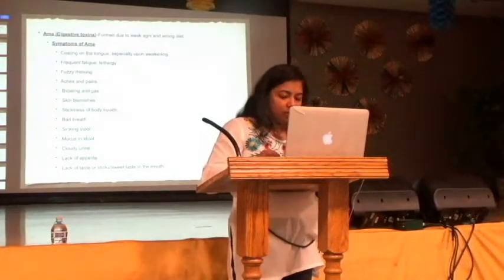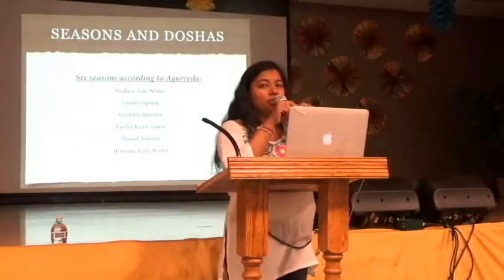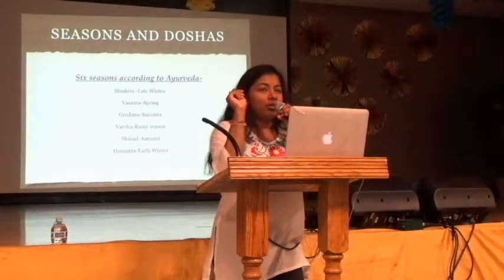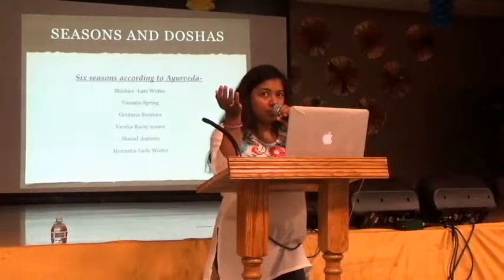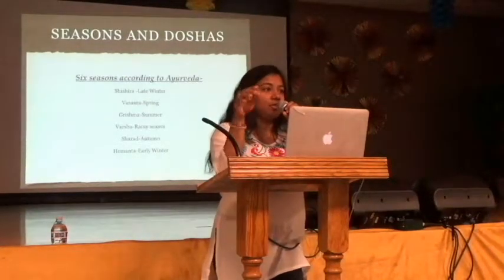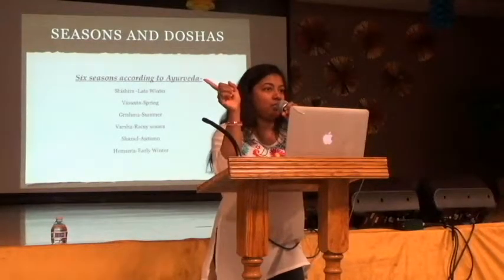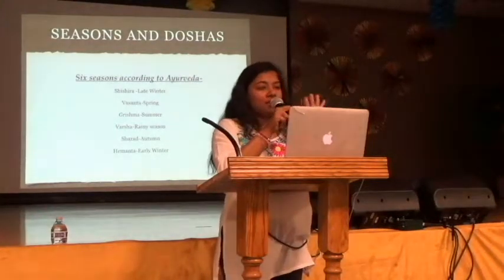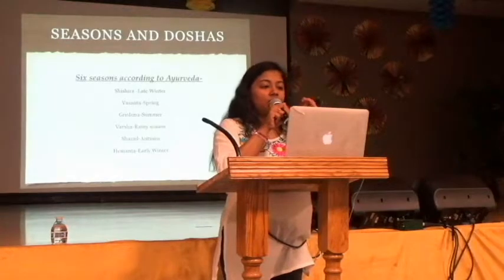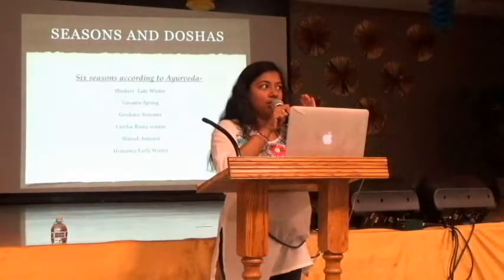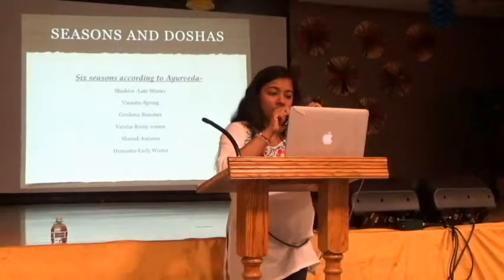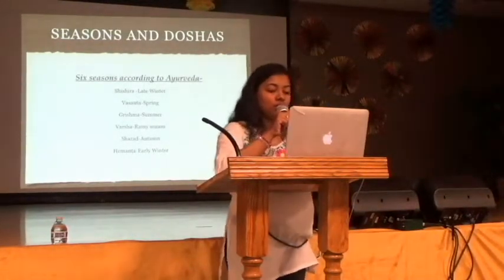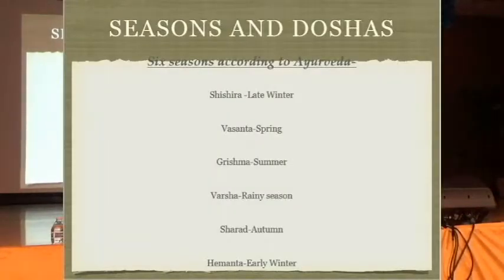Ayurveda talks a lot about doshas and how they change with every season. Our doshas naturally change with every season because our body and the environment outside are deeply connected. Ayurveda says there are six seasons: Shishira (late winter), Vasanta (spring), Grishma (summer), Varsha (rainy season), Sharad (autumn), and Hemanta (early winter). Every dosha changes according to each season naturally.